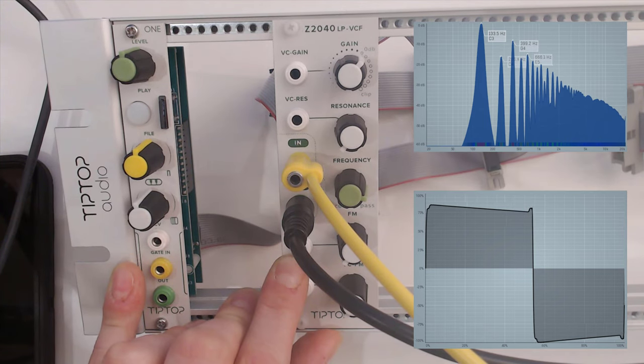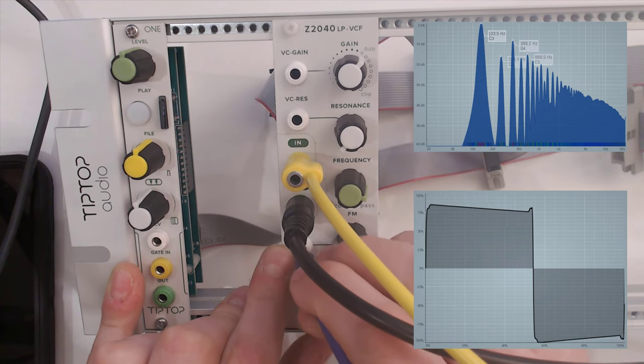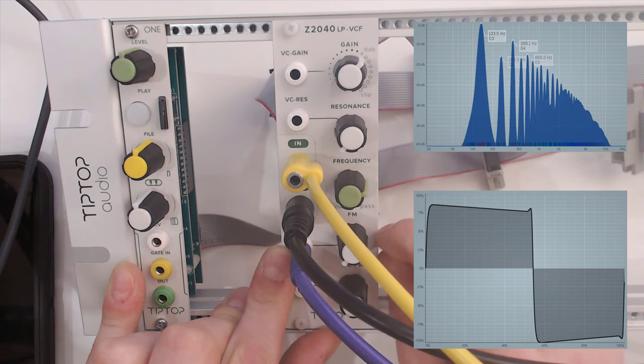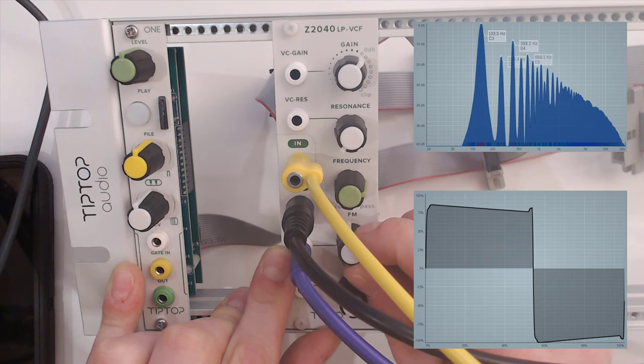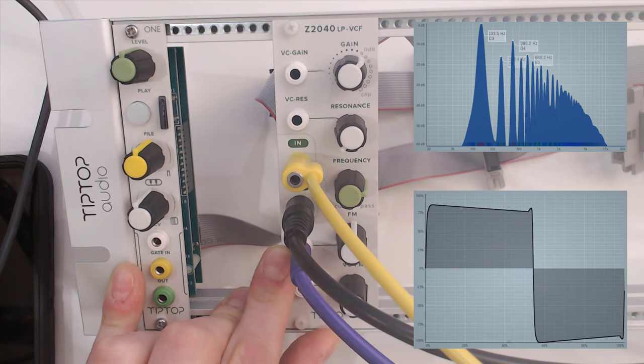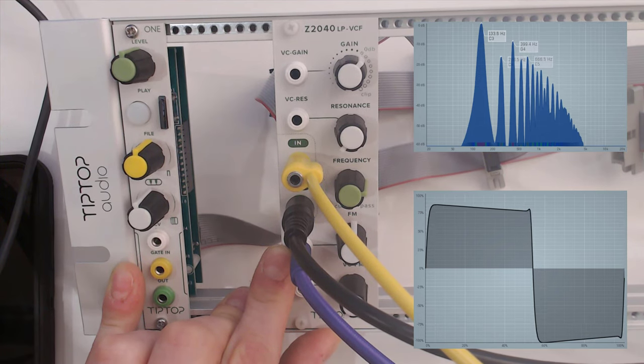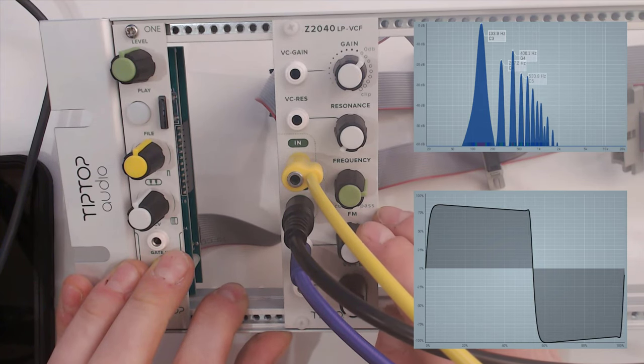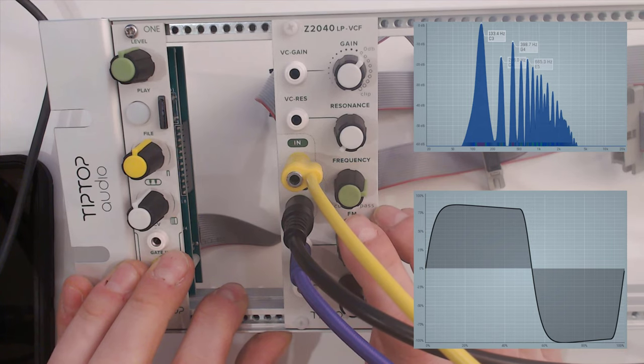So I'm going to grab one of my trusty LFOs and I'm going to connect that to the frequency modulation for the cutoff frequency. So let me open up this attenuator a bit, and you're going to see the cutoff frequency go from right to left and back again. I can go all the way up here. You can see that it gets pretty erratic.